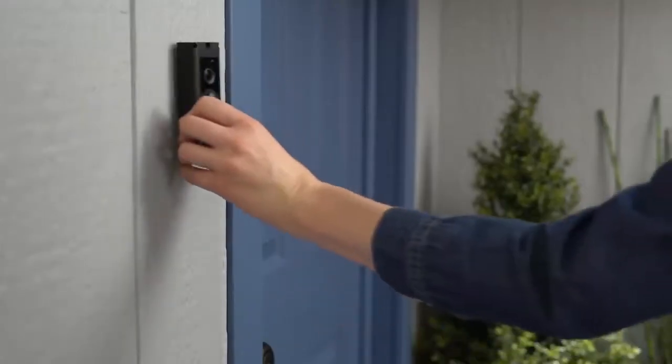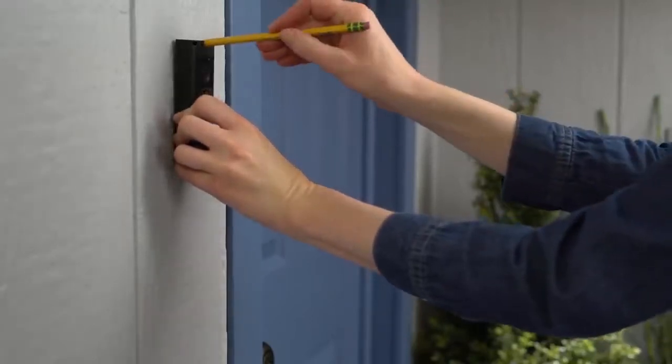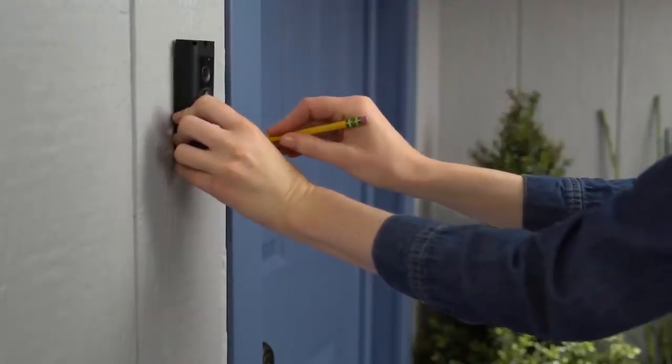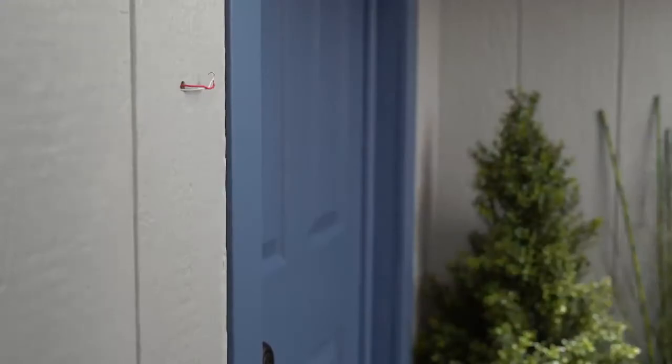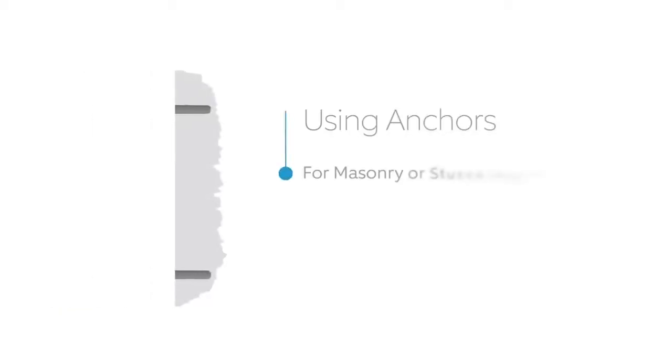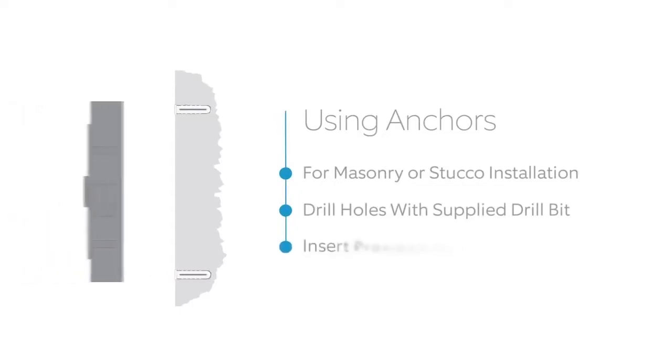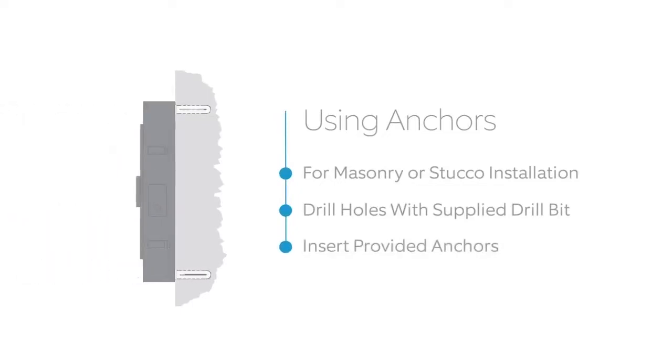Hold your Ring Doorbell in the place you plan to install it and mark the two screw holes at the top and bottom. If you're installing your Ring Doorbell on a masonry surface, such as brick or concrete, you'll need to drill holes for the provided anchors. They should simply push into place, but you can hammer them in if necessary. If you're installing on wood or siding, you can skip this step.